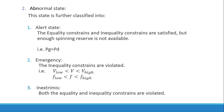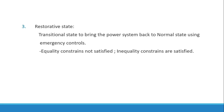The next state is the restorative state, which is a transitional state to bring the system back to normal using remedial control. Here the equality constraints are not satisfied — that is, the power demand is not fully met — however the inequality constraints are satisfied, meaning voltage and frequency are within acceptable limits.